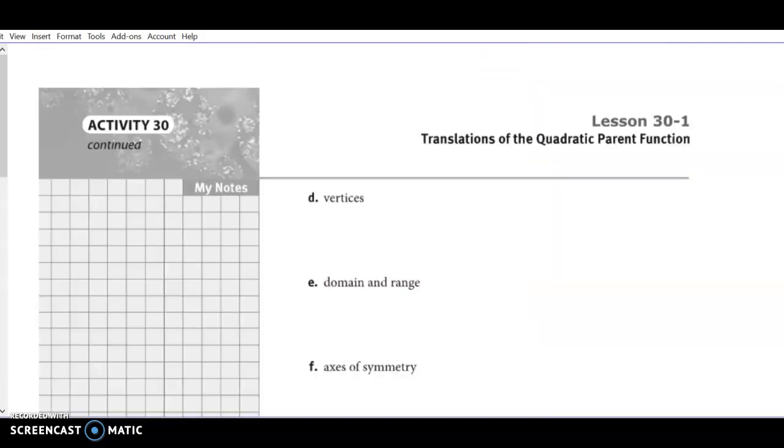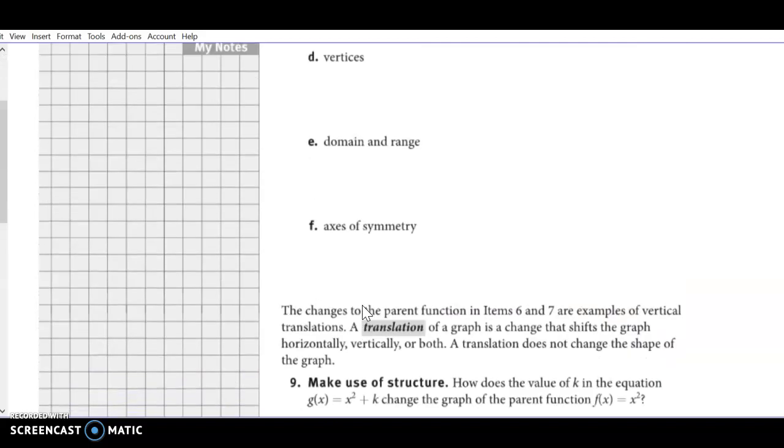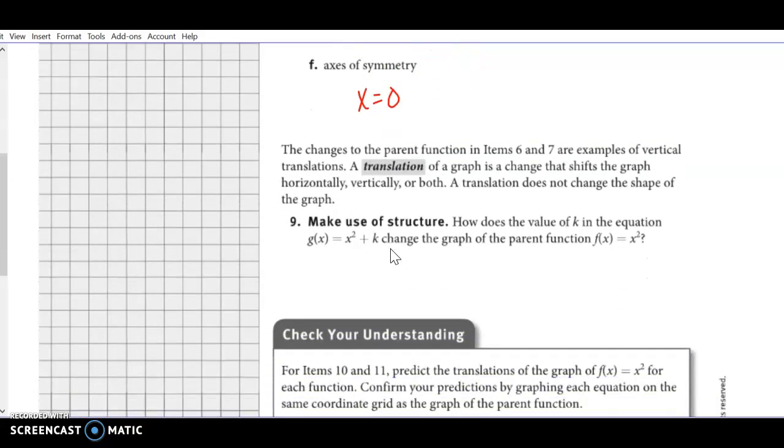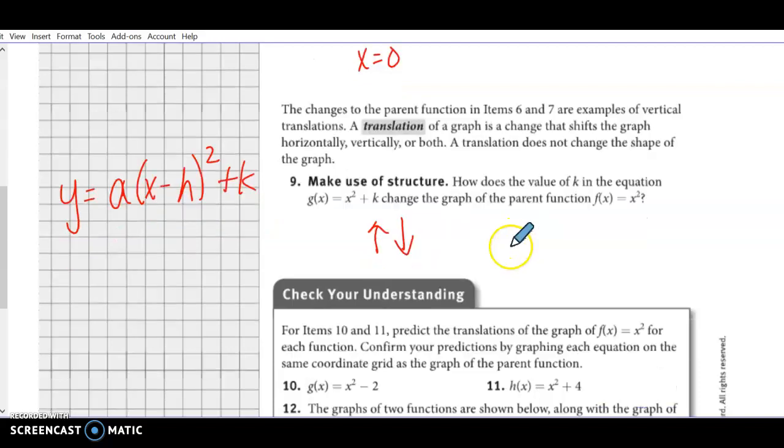So now, our vertex is going to go up or down, depending on what our c was. Our domain was always all real numbers, but our range was c less than or equal to y. And our axis of symmetry was always x equals 0 on all of those. So what we were talking about here was a translation. And we were talking about k. So remember when we talked about vertex form, y equals a times the quantity of x minus h squared plus k. We're looking at the k. And the k makes things go up or down.